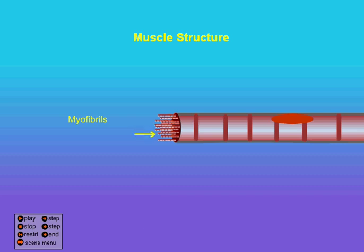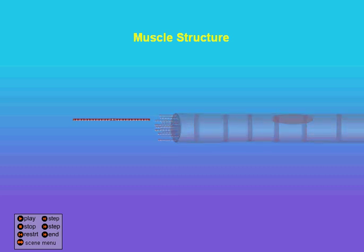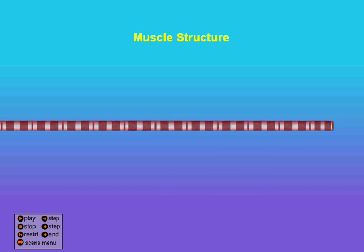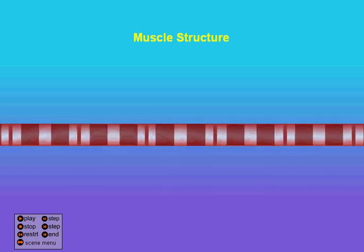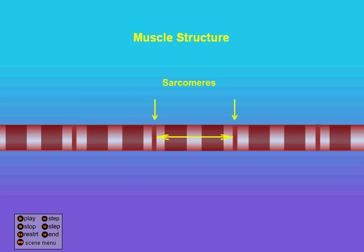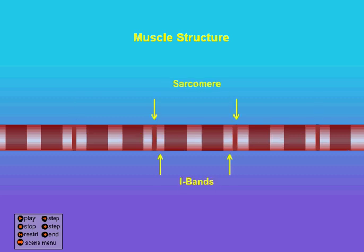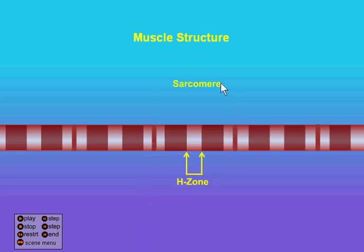So there they are there. Now in each myofibril we've got those filaments. One way that they describe skeletal muscle is with these bands. So between the two Z-bands — these thin bands — is one sarcomere.